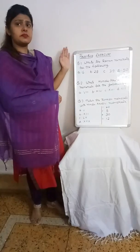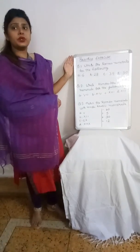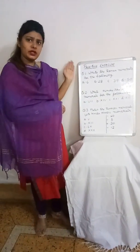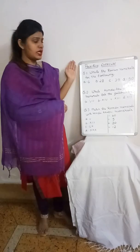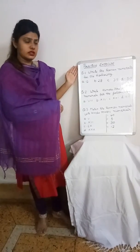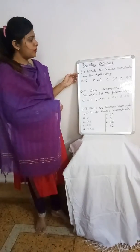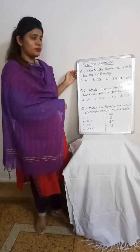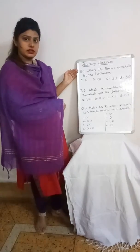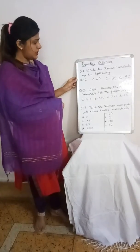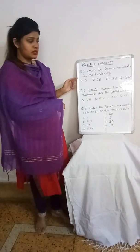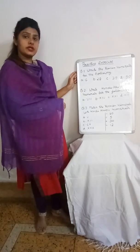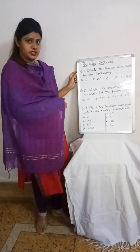Here is a practice exercise for today on Roman numerals. Write down these questions in your notebooks. Question 1: Write the Roman numerals for the following — (A) 6, (B) 28, (C) 39, (D) 50.